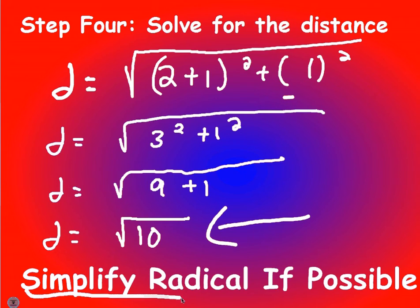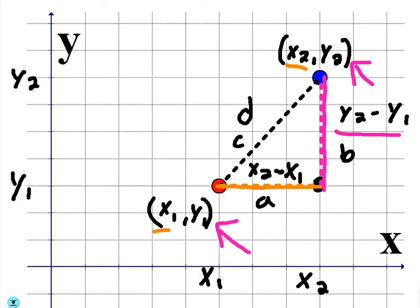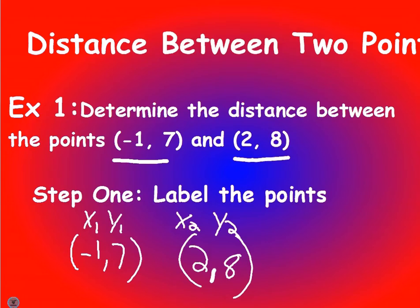Sometimes we have to simplify the radical — for example, the square root of 32 can be simplified. For a lot of questions on the worksheet, the answer will be a radical, not a whole number. The distance between those two points is the square root of 10, which is a little bigger than 3. Remember we're solving for the hypotenuse of the triangle — how far those two points, (-1, 7) and (2, 8), are apart.